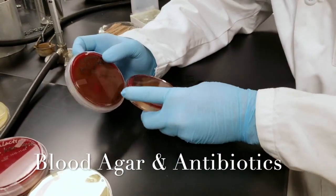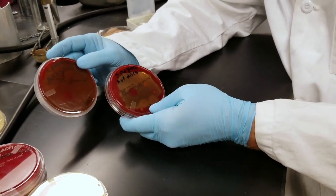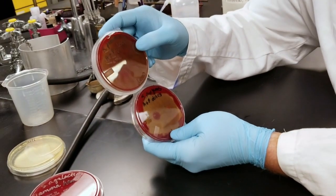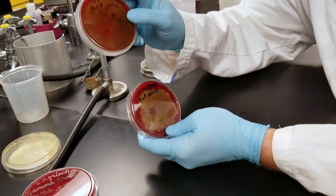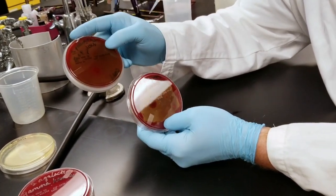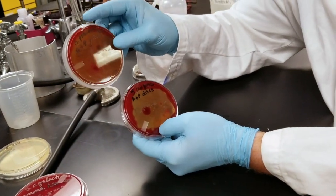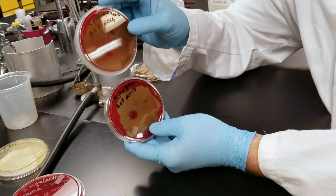All right, so what we're looking at are two different blood agar plates. So in one of them we have beta hemolysis, in one of them we have alpha hemolysis, and then one we have beta hemolysis.